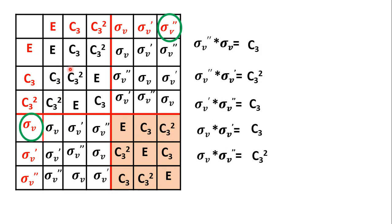The result we find is that in the bottom-right quadrant, you find only E, C3, and C3 square. The diagonally opposite top-left quadrant also contains only E, C3, and C3 square. In the top-right quadrant, you find sigma V, sigma V dash, and sigma V double dash. The diagonally opposite bottom-left quadrant also contains sigma V, sigma V dash, and sigma V double dash. This is the completed group multiplication table for C3V.